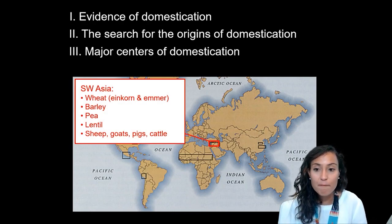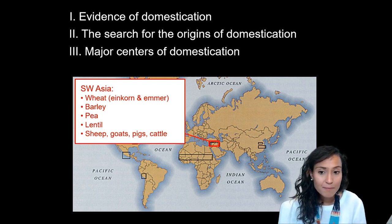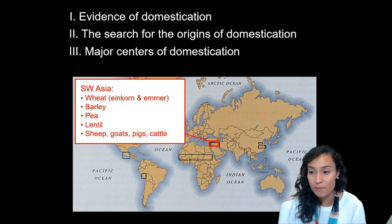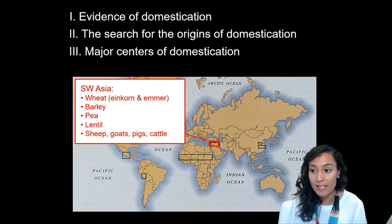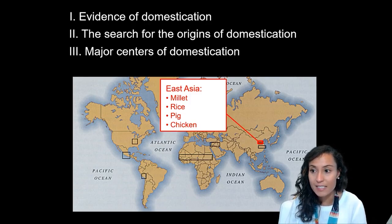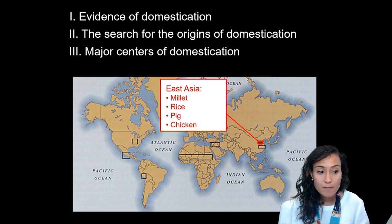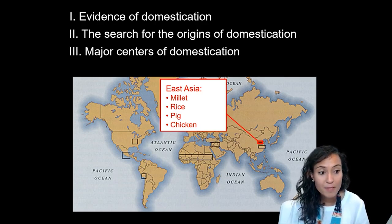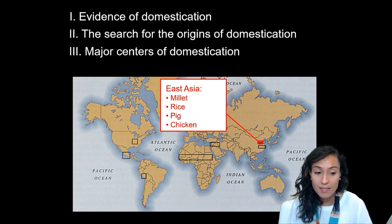There are six major centers of domestication across the globe. Southwest Asia has the earliest archaeological evidence for domestication, particularly of crops like wheat, barley, and lentils, as well as animals like sheep, goat, and pigs. Another early area for domestication is East Asia, but the crops here are slightly different, with a focus on millet and rice, as well as the domestication of chickens and pigs, rather than things like wheat.